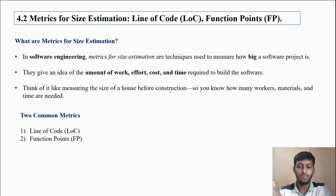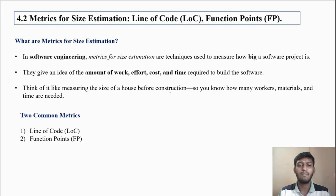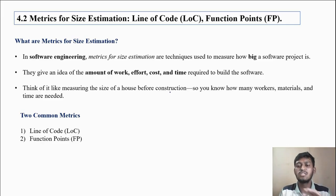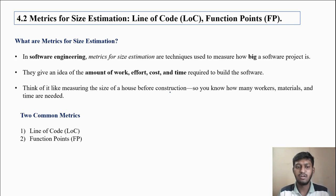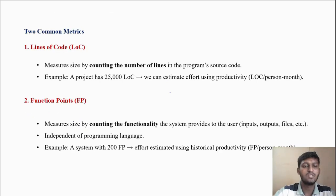If you have to measure how much time, how much cost, and how much effort is needed, it is done on the basis of line of code and function points. There are two common metrics: the first is line of code, and the other is function points. The cost and effort will depend on these two metrics.